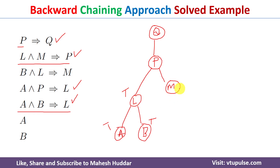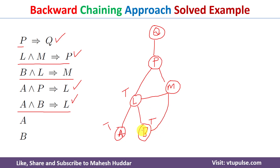We have proved that L is true. What about M? M is not true right now. So we need to select a rule where M is on the conclusion side. This is the only rule where M is present on the conclusion side; its premises are B and L. We have already proved that L is true, and B is a given fact that is true. Because L and B are true, M becomes true.